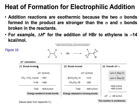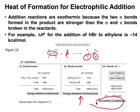Addition reactions will be exothermic because the two sigma bonds formed in the product are stronger than breaking the sigma bond and the pi bond. Remember that forming a double bond in an elimination reaction was endothermic and we needed to put energy — that's why we often see heat in an elimination reaction. For an addition reaction it's actually the opposite: energy is released.